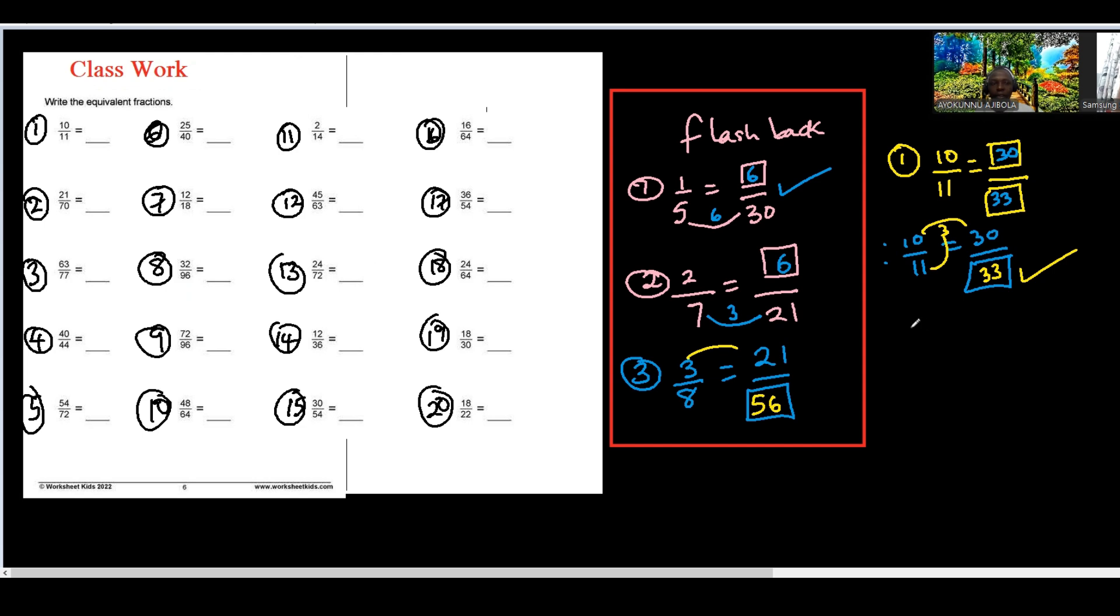Let us look at the next example, number 2. We have 21 over 70. Now again, is there anything that can divide 21 and 70? We can use 7, right? I don't know. 7 can divide both of them, right? Yes. So in the first case, in the first example, in order to get my equivalent fraction, I multiply by 3. This is because nothing can divide both of them. No factor is common to them.